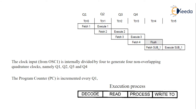During execution, four sub-processes take place: decode, read, process, and write. Decode means that if you write any code in assembly language or C language, the opcodes are stored in program memory. When one instruction comes in, the microcontroller decodes that instruction.